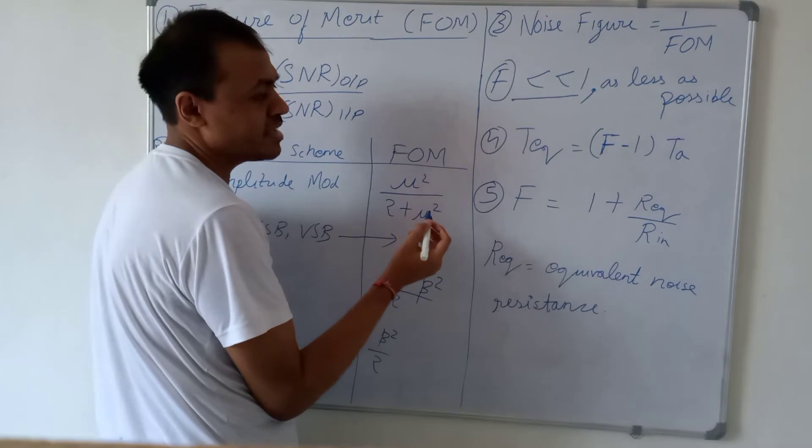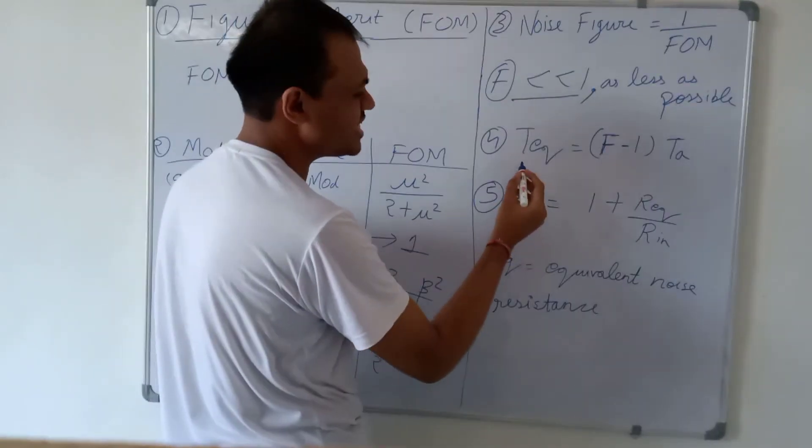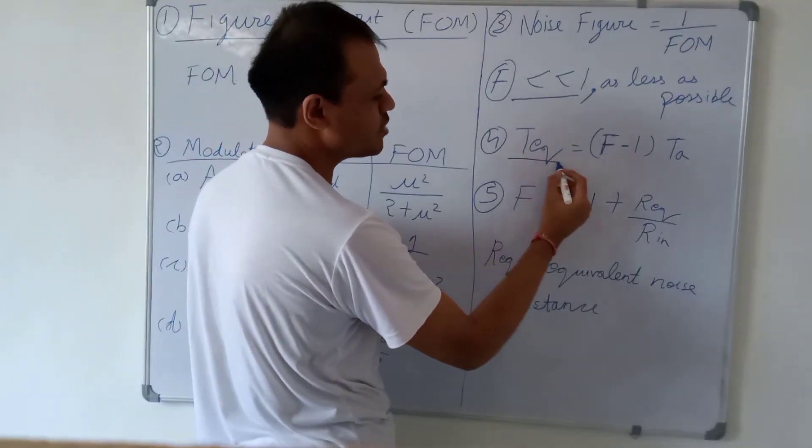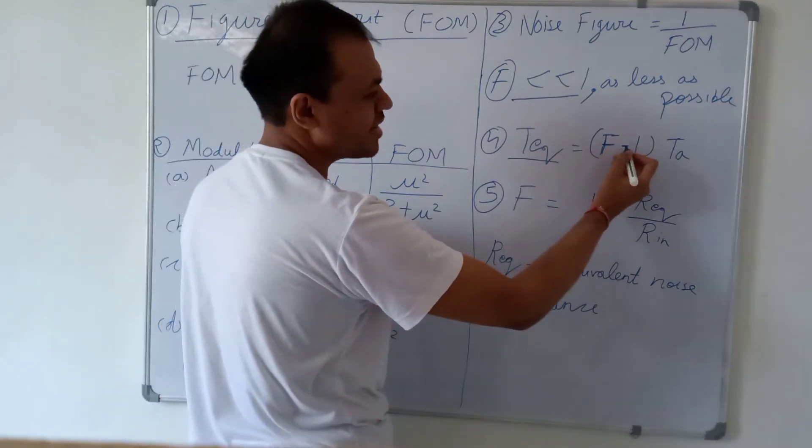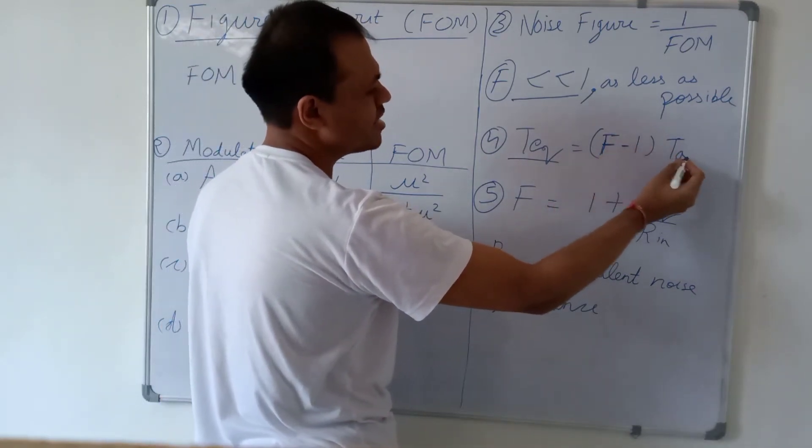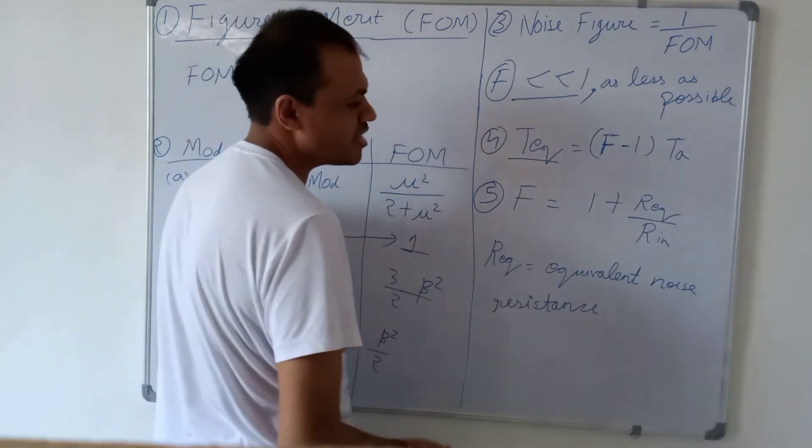Now, if we have an equivalent noise temperature, let's say T equivalent is the equivalent noise temperature, then T equivalent is given by noise figure F minus 1 multiplied by the room temperature TA.